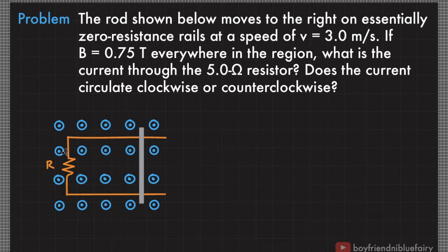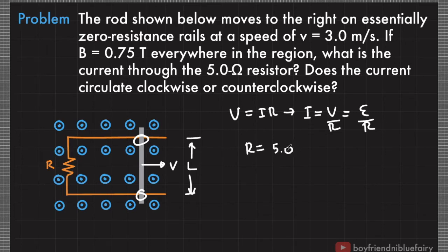To find the current through this resistor, we must find the induced EMF and then use Ohm's Law to calculate for the current. This rod is moving with a velocity V to the right. The effective length that contributes to the induced EMF is this length because this is the only part of the rod that touches the zero resistance rails. R here, based on the given, is equal to 5.0 ohms. We need to calculate for the induced EMF to calculate the current through R.